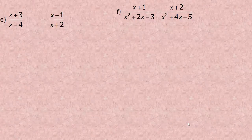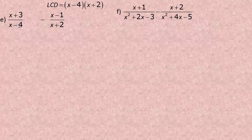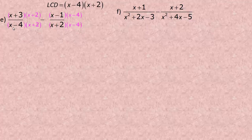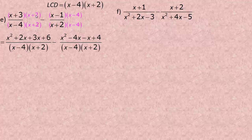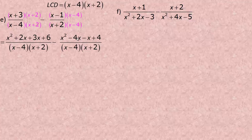The next example has binomial denominators x minus 4 and x plus 2, which don't factor further. The LCD is x minus 4 times x plus 2. The first fraction already has x minus 4, so multiply by x plus 2; the second already has x plus 2, so multiply by x minus 4. Expanding the first numerator: x times x is x squared, then 2x, then 3x, then 6. Expanding the second: x times x is x squared, x times negative 4 is negative 4x, negative 1 times x is negative x, and negative 1 times negative 4 is positive 4.